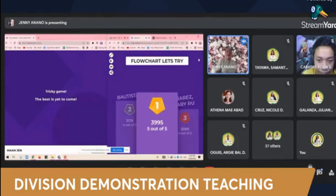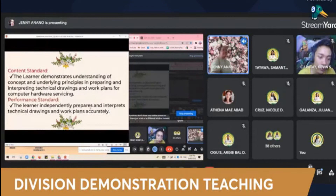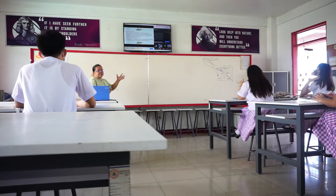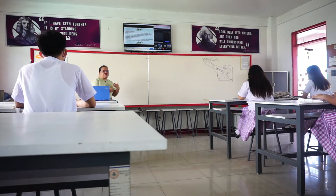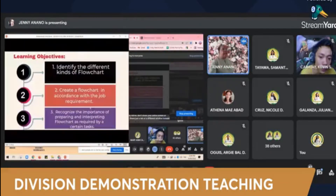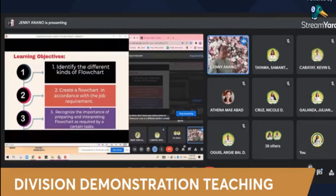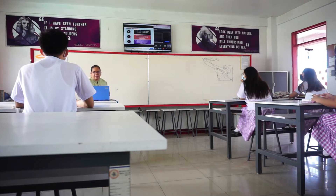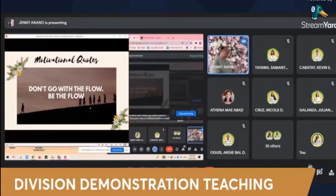Our content standard: learners demonstrate understanding of the concepts and underlying principles in preparing and interpreting technical drawings. Our performance standard: you are going to interpret a technical drawing. Our objectives are: to identify the kinds of flowcharts, to create a flowchart in accordance with a specific job, and to recognize the importance of preparing a flowchart.